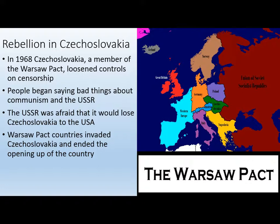The collapse of the Soviet Union starts in Czechoslovakia in 1968. Czechoslovakia, a member of the Warsaw Pact behind the Iron Curtain, starts loosening controls on censorship. People begin saying bad things about communism and the Soviet Union. The Soviet Union gets scared — they don't want to lose Czechoslovakia to democracy. They're afraid that with freedom of speech, Czechoslovakia will move toward democracy. They can't have the middle of Europe going democratic in 1968. The Warsaw Pact countries come together, invade Czechoslovakia, and end the short rebellion. But it plants a seed — the openness in Czechoslovakia had planted a seed that the rest of the Warsaw Pact would shortly follow.